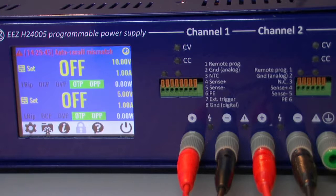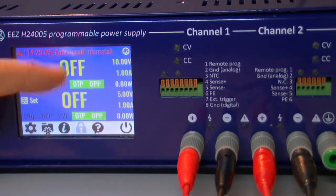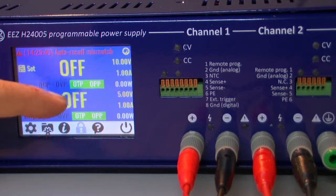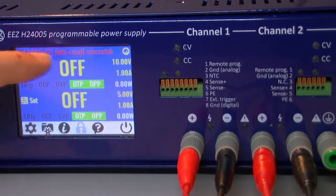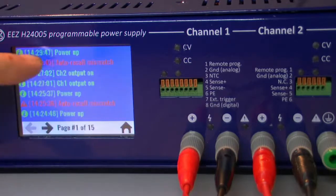Good. Thanks to that security mechanism, firmware on the startup recognized a difference between the last set value and the values stored in the power up profile. And put both channels in off, output is off. And we'll get that auto-recall mismatch information in our log file.